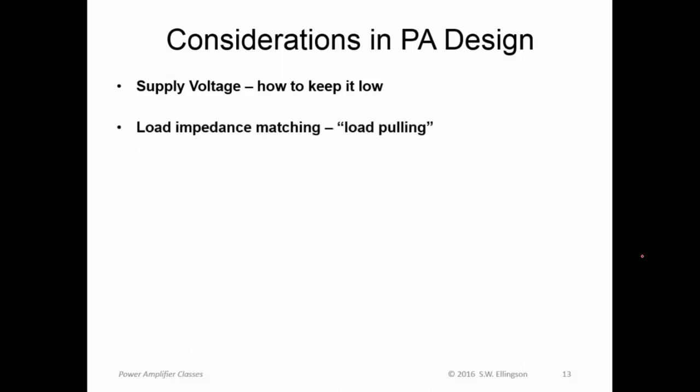Load impedance matching, in particular, this issue known as load pulling. And the problem is that because the amplifier is nonlinear, there's no one right set of bias conditions or output impedances that work. So there's a range of impedances that all apply at different moments or different parts of the waveform. So this is known as load pulling. And trying to find an optimum impedance match that's kind of a compromise over all the impedance matches that are in effect over the span of a waveform is a relatively difficult problem.